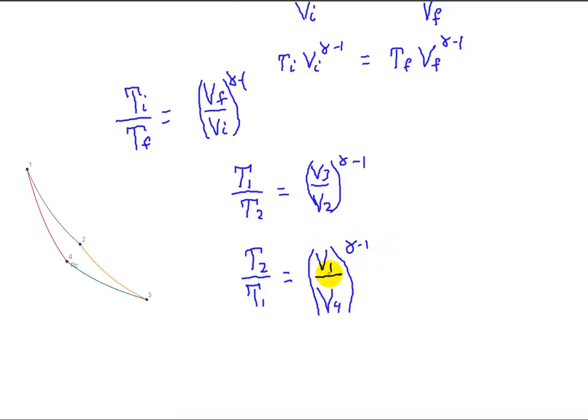Alright, so now I'm close to what I want, but not quite. Let's take this one, just for the fun of it, and invert it. Let's invert that one. So that inverts to, and that would be T1 over T2. That, of course, would then be equal to V4 over V1, and I really didn't change the gamma minus 1 at all, that's still the same.